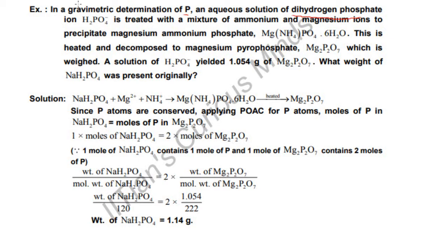The question reads: In a gravimetric determination of phosphorus, an aqueous solution of dihydrogen phosphate ion H2PO4- is treated with a mixture of ammonium and magnesium ions to precipitate magnesium ammonium phosphate. This product is formed from these reactants. This is heated and decomposed to magnesium pyrophosphate.